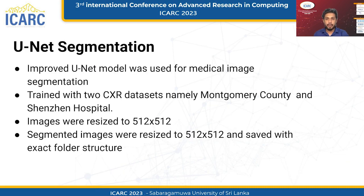In our study, we used an improved U-Net model for medical image segmentation, which has been shown to be effective for segmenting medical images. We trained the model using two CXR datasets, namely Montgomery County and Shenzhen Hospital. To prepare the images for training and segmentation, we first resized them to 512×512, which is a common size used in medical imaging. We then used the improved U-Net model to segment the images, resulting in a binary mask for the areas of interest in the CXR images. The segmented images were then resized to 512×512 and saved with the exact folder structure, enabling us to easily link them with their corresponding reports during the report generation process. This approach helped us achieve higher accuracy in report generation by providing more precise and relevant information.